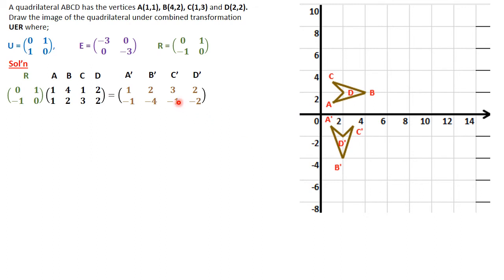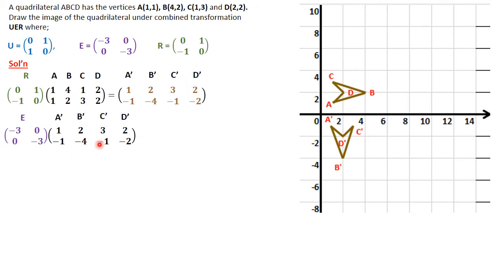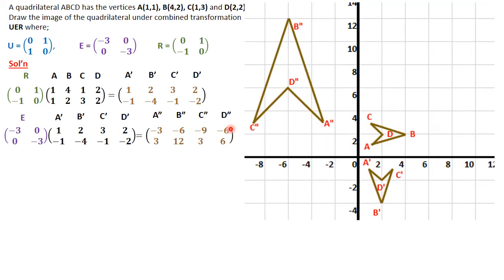Then we move ahead and pre-multiply with the second matrix E, which is [-3,0; 0,-3] — this looks like an enlargement with scale factor -3 about the origin. The first-step image A'B'C'D' is pre-multiplied by E. That gives us the second image A''B''C''D'': A'' is (-3,3), B'' is (-6,12), C'' is (-9,3), and D'' is (-6,6). It's an enlargement going to the opposite side of the center of enlargement with scale factor -3.